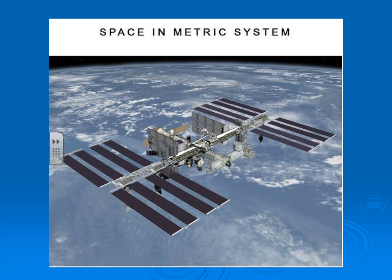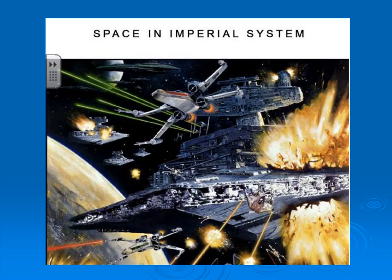If I still haven't convinced you yet that the metric system is way better, I'm going to give it one last shot. So here is space in the metric system, and this is what space would look like in the imperial system. Okay, for those of you that don't get it, it's a Star Wars joke. There's the Imperials and there's the Rebels, and that's why it's funny.